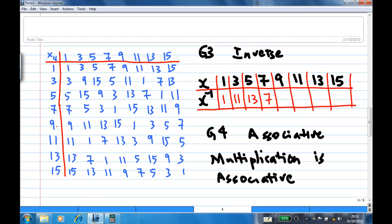How about inverse of 9? 9 times 9 is 1. So the inverse of 9 is 9. How about 11? 11 times 3 is 1. So the inverse of 11 is 3. How about 13? 13 times 5 is 1. So the inverse of 13 is 5. And then 15 times 15 is 1. So the inverse of 15 is 15.